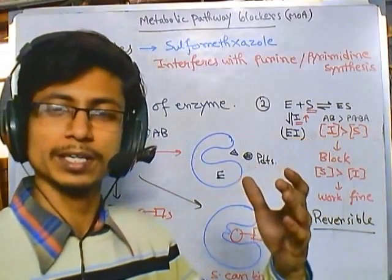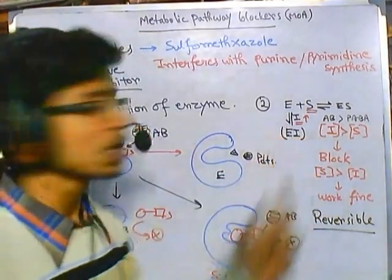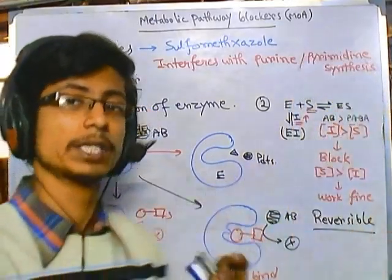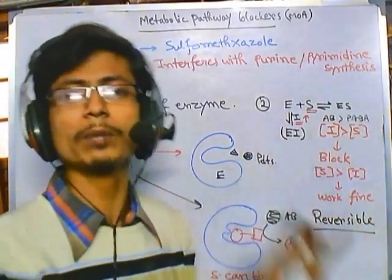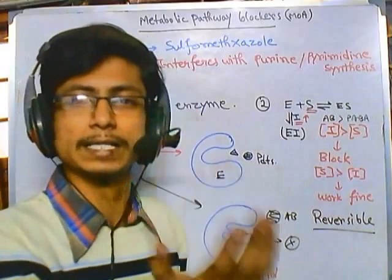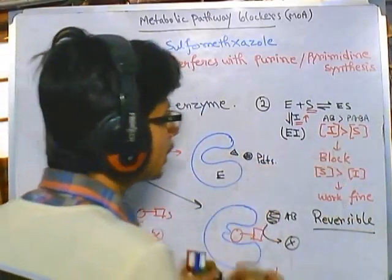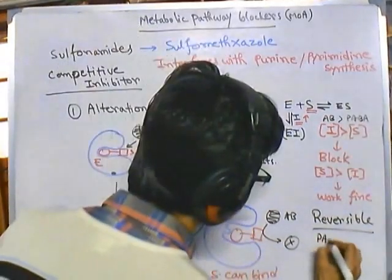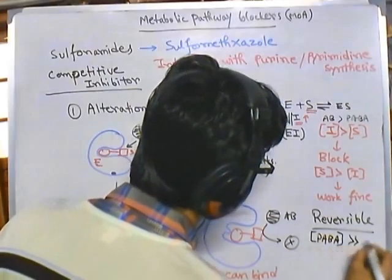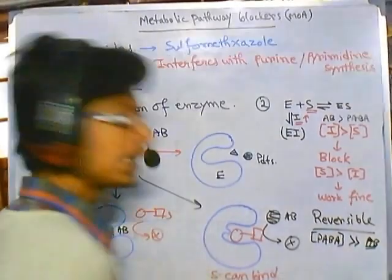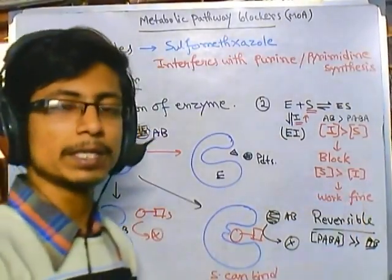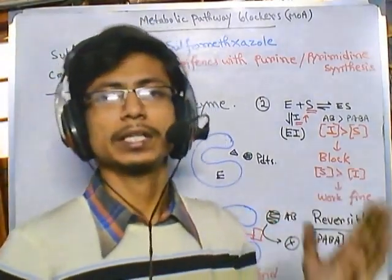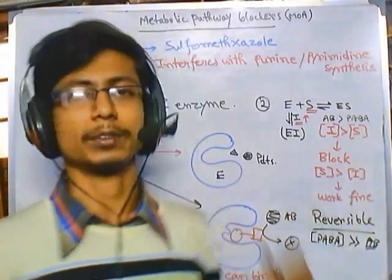To reverse competitive inhibition, we can increase the substrate concentration. That is exactly what bacteria can do — they start producing more and more PABA and dihydrofolate diphosphate, which are the substrates of this reaction. They raise the concentration of substrate inside the cell, and at a certain point, the concentration of PABA and dihydrofolate diphosphate exceeds that of the antibiotic inhibitor. This reverses the situation, the enzyme gets access to the substrate, and nucleotide synthesis begins again.